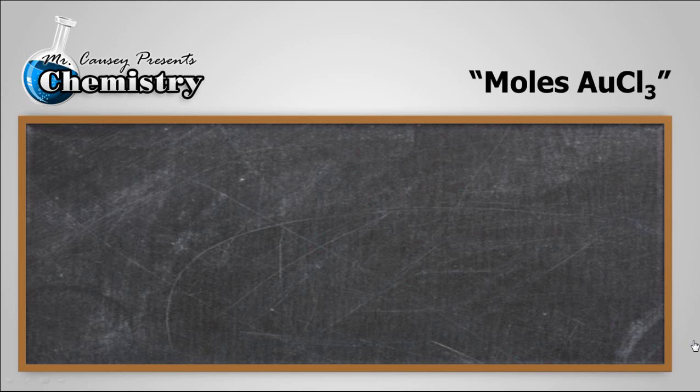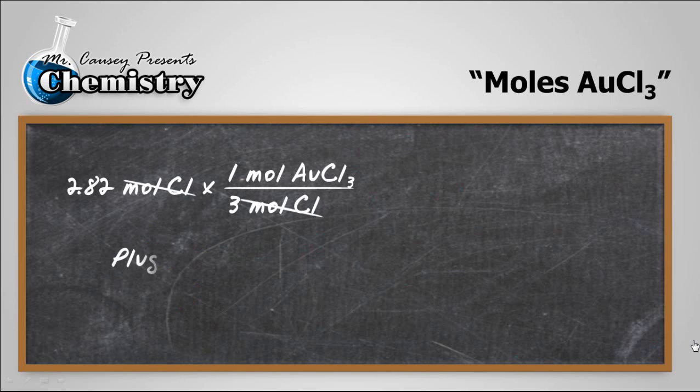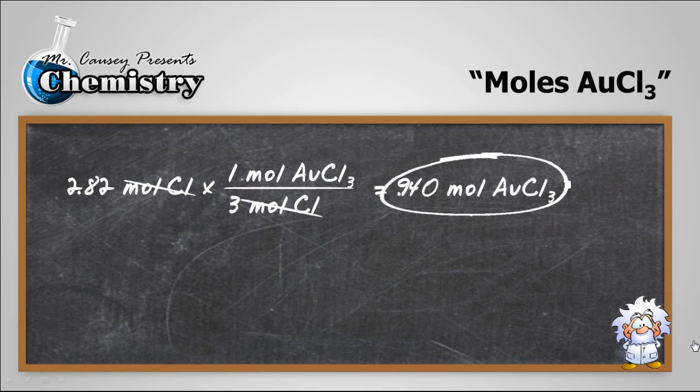Next, we need to change moles of chlorine to moles of gold 3-chloride, and 2.82 moles of chlorine multiplied to the mole ratio. Now, remember here, the mole ratio is like magic. It changes moles of chlorine into moles of gold 3-chloride. So, cross out the moles of chlorine, plug and chug, which is 2.82 divided by 3, and we have 0.940 moles of gold 3-chloride.